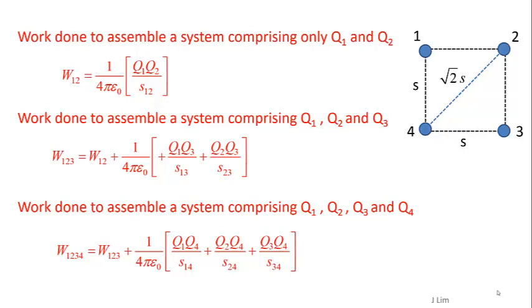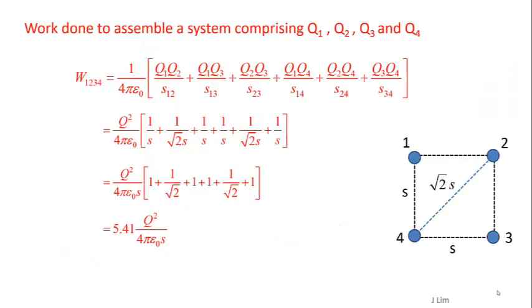The work done to assemble a system comprising four charges Q1, Q2, Q3, and Q4 is given by W1234. Solving, we get the work done W1234 equal to 5.41 Q² over 4πε₀s.